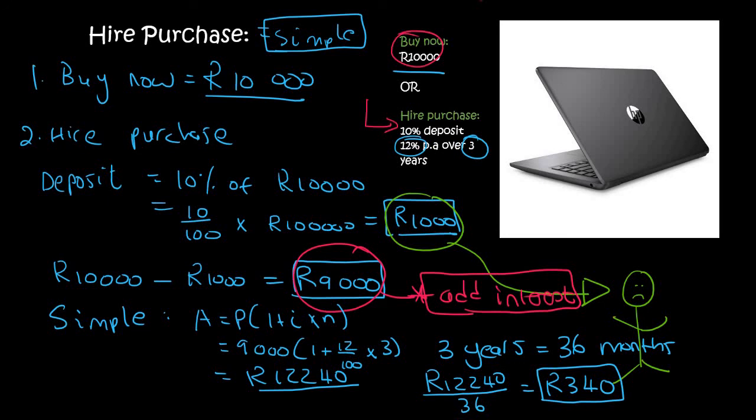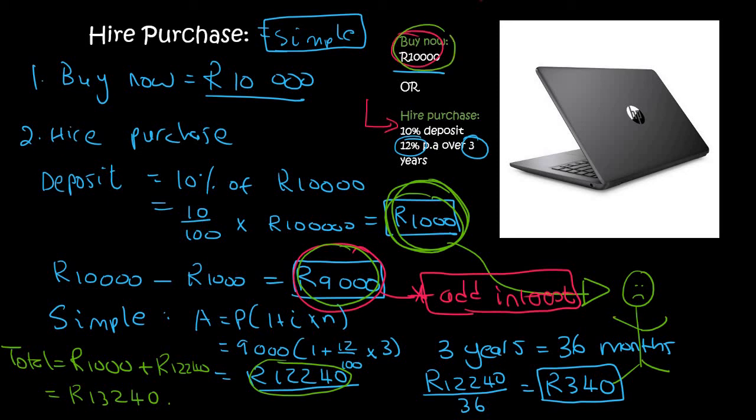Well, what happened is you spent 1,000 Rand already. So the total is going to be the 1,000 Rand plus that 9,000 Rand turned into 12,240 Rand. So you've got to add that on. And so you are going to end up spending 13,240 Rand on a laptop that is only worth 10,000 Rand. So the disadvantage is that you're going to pay more for the laptop, but the advantage is that each month you're only going to have to spend 340 Rand.